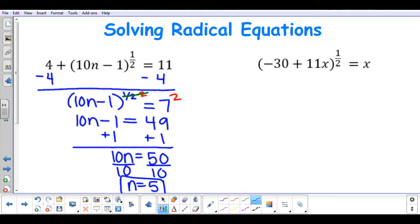In our second example, my parentheses is already isolated, so I am going to raise both sides of the equation to the reciprocal of 1 half. So the reciprocal of 1 half is an exponent of 2, so both sides of my equation are going to receive an exponent of 2. The 1 half times 2 will end up canceling, and I am going to be left with negative 30 plus 11x equal to x squared.